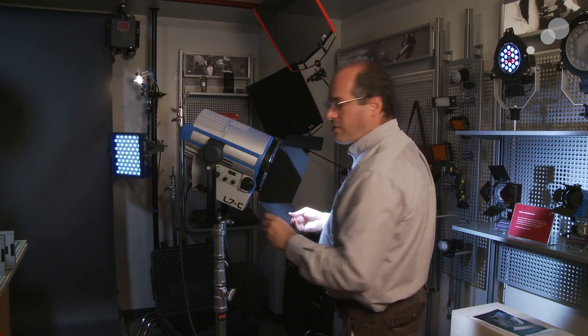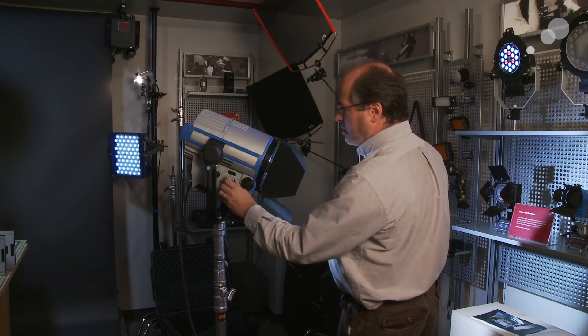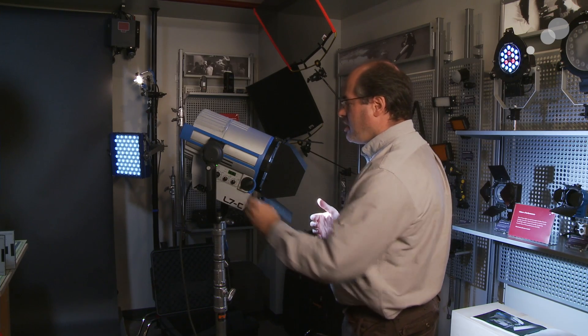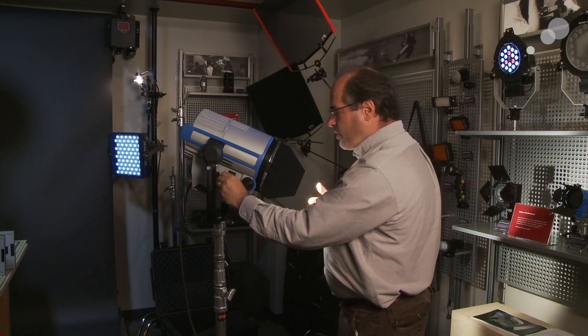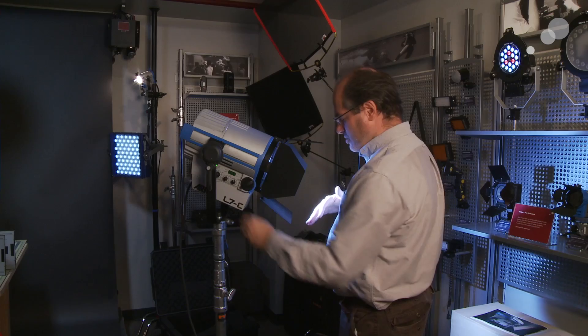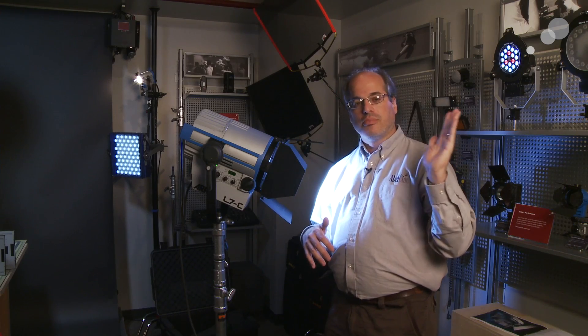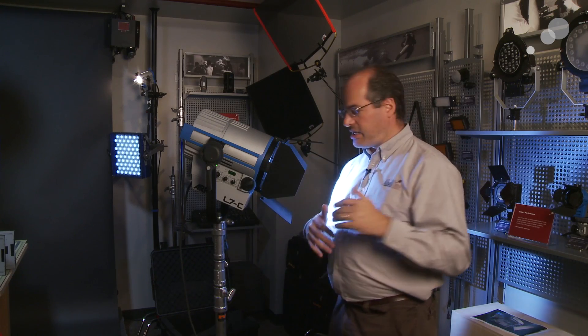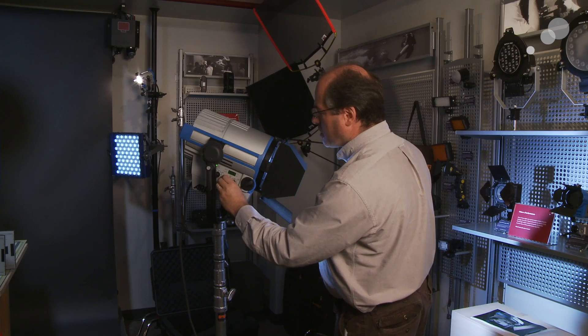With that control, I also have some more control, because this is the color controllable one, L7C. That means I can get all the way down to 2,700 degrees and all the way up to 10,000 degrees Kelvin, so much further beyond the 3,200 to 5,600 degrees of tungsten and daylight. I have a range beyond that, but wait, there's more.